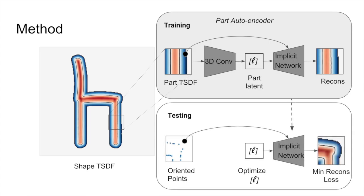At test time, we use an instance of a pre-trained implicit function decoder in each grid cell to reconstruct the respective scene part.